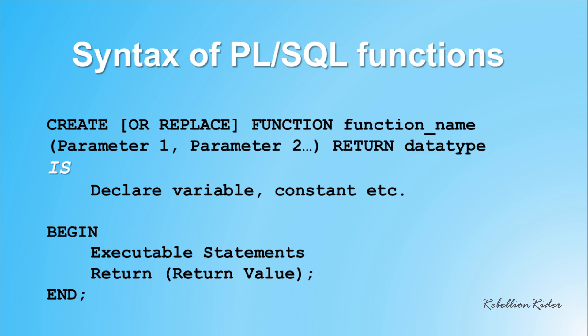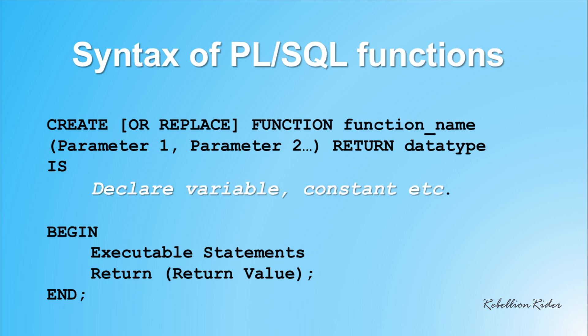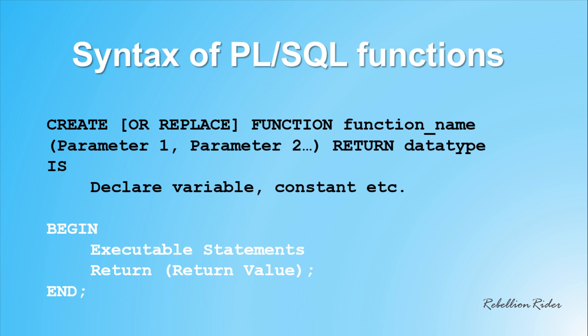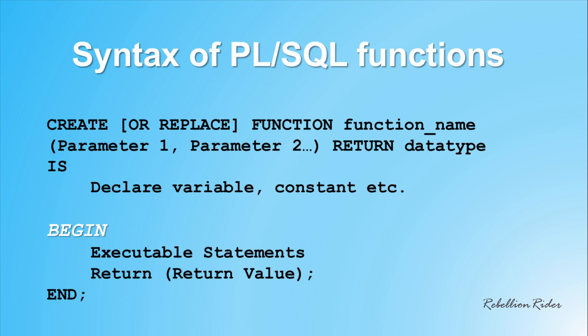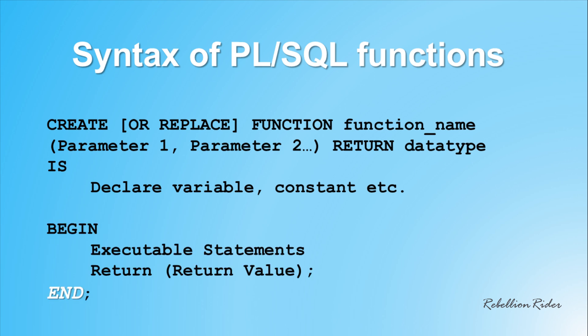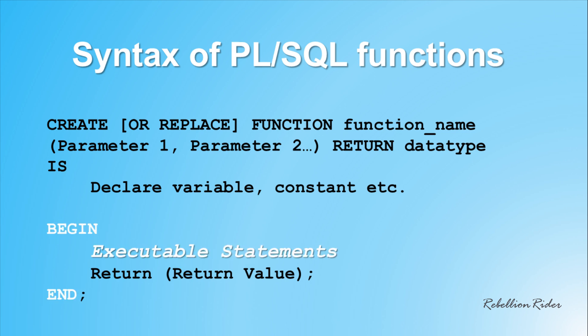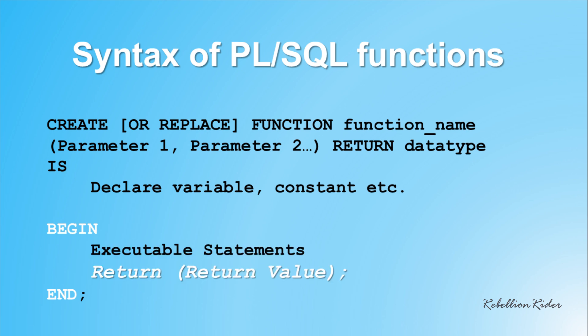Then we have the keyword IS. The IS keyword indicates the ending of the header of the function. If you want to declare a variable or a constant, you can do so right after the IS keyword — right before the start of the execution section — and that too without using the DECLARE keyword. Then we have the execution section of our PL/SQL function. Similar to an anonymous PL/SQL block, the keyword BEGIN marks the beginning of the execution section and the keyword END marks the ending.